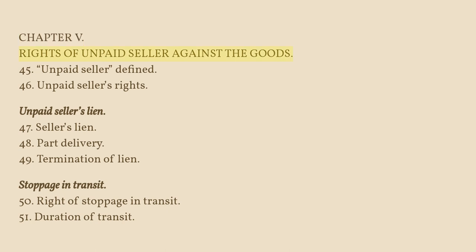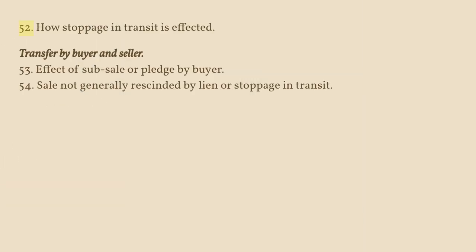Chapter V — Rights of Unpaid Seller Against the Goods. Section 45: Unpaid Seller Defined. Section 46: Unpaid Seller's Rights. Unpaid Seller's Lien. Section 47: Seller's Lien. Section 48: Part Delivery. Section 49: Termination of Lien. Stoppage in Transit. Section 50: Right of Stoppage in Transit. Section 51: Duration of Transit. Section 52: How Stoppage in Transit is Effected. Transfer by Buyer and Seller. Section 53: Effect of Sub-Sale or Pledge by Buyer. Section 54: Sale not Generally Rescinded by Lien or Stoppage in Transit.